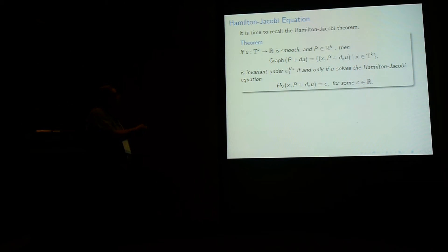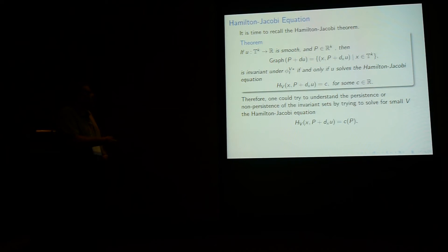So now it's time to recall what is the Hamilton-Jacobi theorem. So the theorem says the following thing, if you pick up a smooth function, and some fixed p in Rᴷ, you look at the graph of P plus the derivative of u. Then it's invariant under the Hamiltonian flow, if and only if it solves the Hamilton-Jacobi equation, hᵥ(x, P + dₓu) equals c for some constant. So the graph is invariant if and only if the Hamiltonian is constant. So this is classical Hamilton-Jacobi theorem. Therefore, one should try to understand persistence or non-persistence of the invariant set by trying to solve for small v, the Hamilton-Jacobi equation, hᵥ(x, P + dₓu) equals c for some fixed constant.